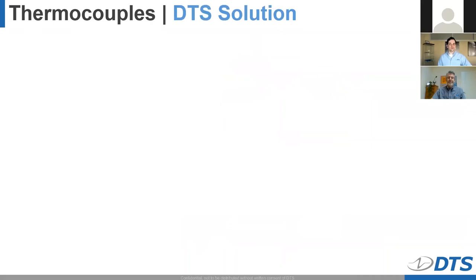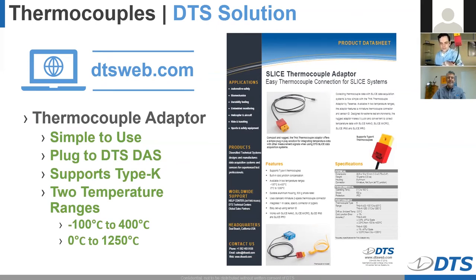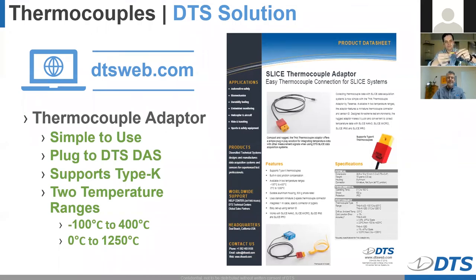So how does DTS support this solution? Like all these sensors, connecting to your DTS DAS is simple. We sell a thermocouple adapter which supports the type K thermocouple. Type Ks have a very wide linear operational range, and for that reason they are one of the most popular options out there. Here's that exact product — it's a pretty simple device showing the type K display. You plug your thermocouple probe into it, lining up your positive and negative, and then you're able to directly connect this into your DTS DAS.